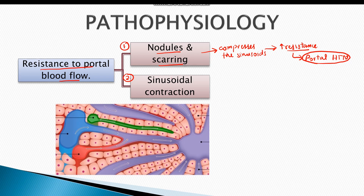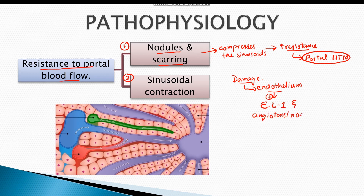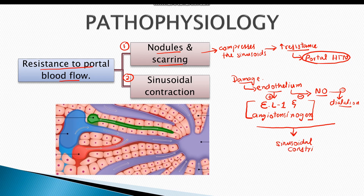Sinusoidal contraction also plays a major role in resistance to portal blood flow. Damage to the endothelium in sinusoids results in release of endothelin-1 and angiotensinogen, both of which cause vasoconstriction. Simultaneously, there is inhibition of nitric oxide release from endothelial cells, resulting in loss of dilation and sinusoidal constriction, which adds to resistance and pooling of blood, causing portal hypertension.